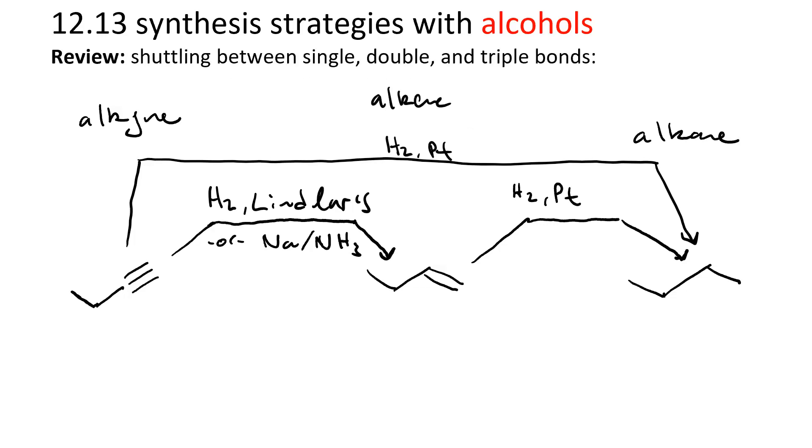What about going back the other way? To get from the alkene to the alkyne, we need to do a two-step, actually a three-step synthesis. First, we'd use Br2 and CCl4.